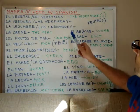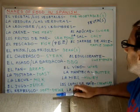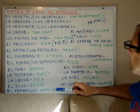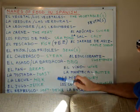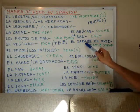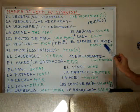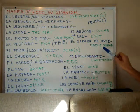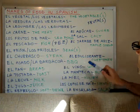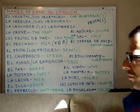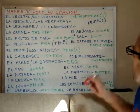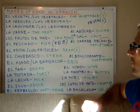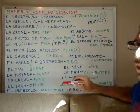We have el azúcar for sugar, la sal for salt, and el jarabe de arce for maple syrup. Arce is the tree — the maple tree. Jarabe means syrup.